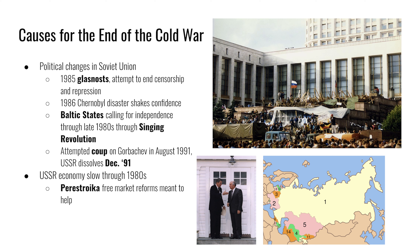The 1986 Chernobyl disaster also shook the confidence of the Soviet Union. There was an attempt to cover up the meltdown of the nuclear power plant in modern-day Ukraine, and residents of the nearby town were exposed to harmful radioactive contamination — many died or developed cancer later in life. The Baltic states — Estonia, Latvia, and Lithuania — began calling for independence in the 1980s, starting a series of protests called the Singing Revolution in 1987. The Soviet Union and Warsaw Pact had a history of violently putting down such movements, as in Poland and Hungary in 1956 and Czechoslovakia in 1968. But with the new glasnost policy, Gorbachev limited the courses of action the Soviet Union could carry out.